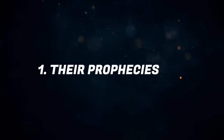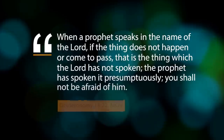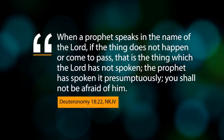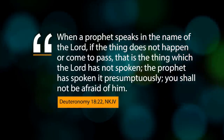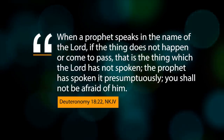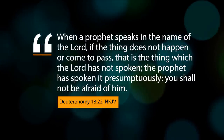Number 1. Their prophecies fail. One sure sign that someone is a false prophet is that their prophecies fail. Deuteronomy chapter 18 verse 22 says, 'When a prophet speaks in the name of the Lord, if the thing does not happen or come to pass, that is the thing which the Lord has not spoken. The prophet has spoken it presumptuously. You shall not be afraid of him.'